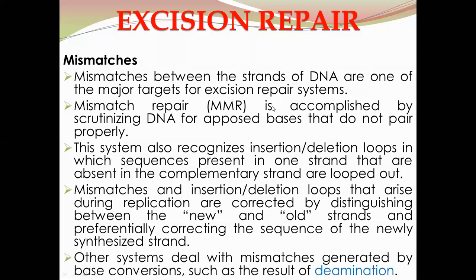Other systems deal with mismatches generated by base conversion, such as deamination. The mismatch repair system can also identify base analogs — bases incorrectly incorporated into DNA during replication. In addition to the four standard bases — adenine, cytosine, guanine, and thymine — there are other bases such as 5-bromouracil, which are similar to the four bases and are commonly known as base analogs. During replication they can be mistakenly incorporated into DNA and are repaired by the mismatch repair system. These base analogs are a result of the deamination process.